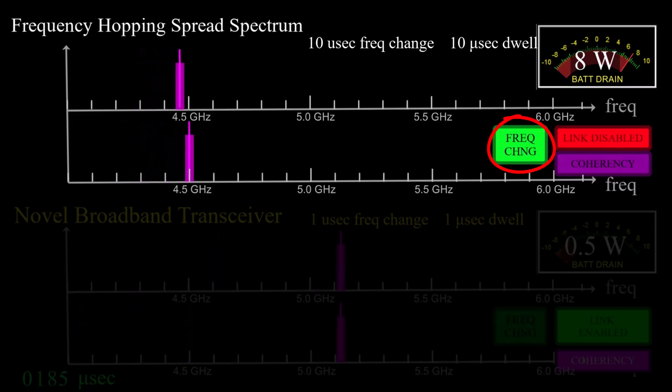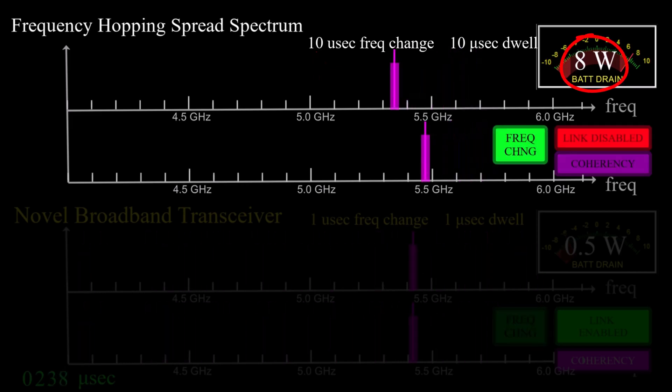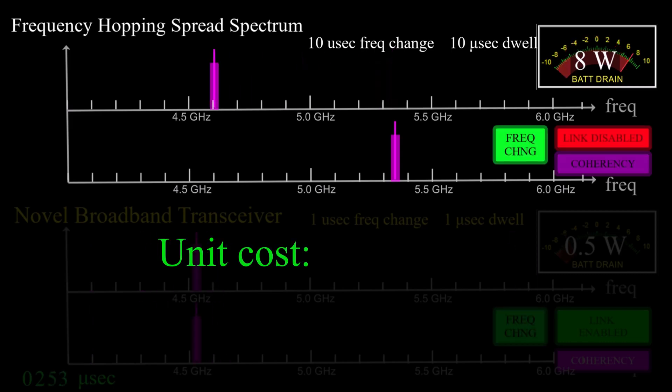The frequency transition time is 10 microseconds over 1 gigahertz, and the dwell time is also 10 microseconds. Power consumption is ballpark 8 watts, and the unit cost is maybe $300.